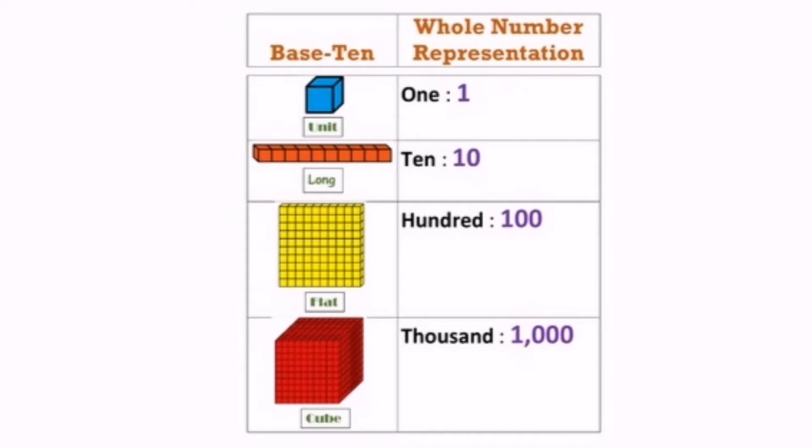We look at this chart. One unit or one short block number is represented to number 1. One long is 10. One flat is represented to 100, and one cube represents 1,000.